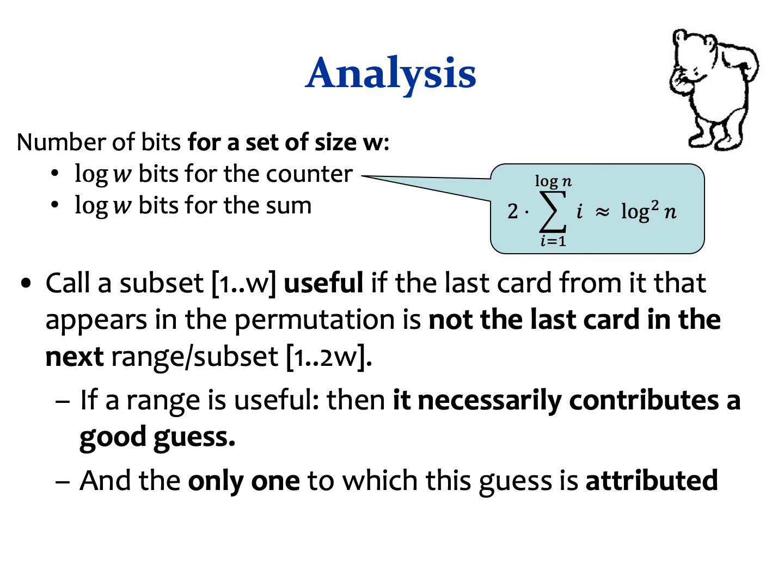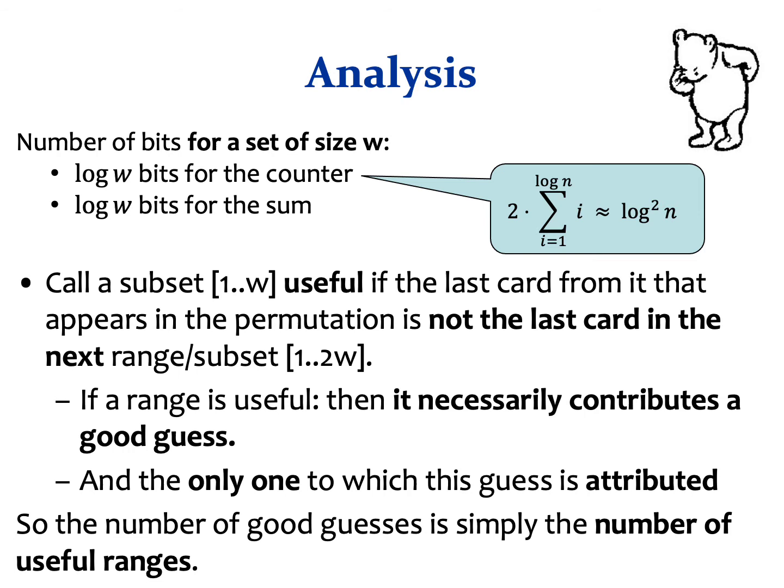As for the performance, consider a random ordering of the deck represented by a random permutation. We call a subset useful if the last card from it that appears in the permutation is different from the last card from the following subset. If a range is useful, then we guess the last card correctly, as our guesser repeats guessing this last card. We attribute this correct guess to this useful subset, so essentially the number of good guesses is simply the number of useful ranges.